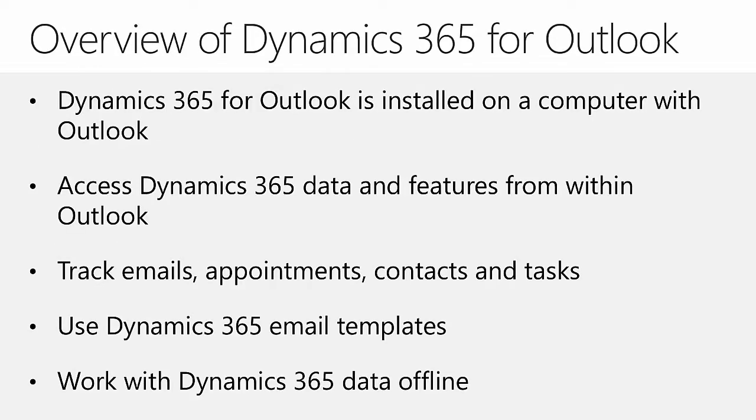Dynamics 365 for Outlook is installed on a computer that runs Outlook and provides access to the same data as the web client, but from within Outlook. It also allows Outlook items such as email, appointments, contacts, and tasks to be tracked in Dynamics 365. Tracking means that an Outlook item is copied to the Dynamics 365 database. For example, a user receives an email from a customer which the user needs to store in Dynamics 365. All the user has to do is open or select the email from the customer and click on the button labeled Track.